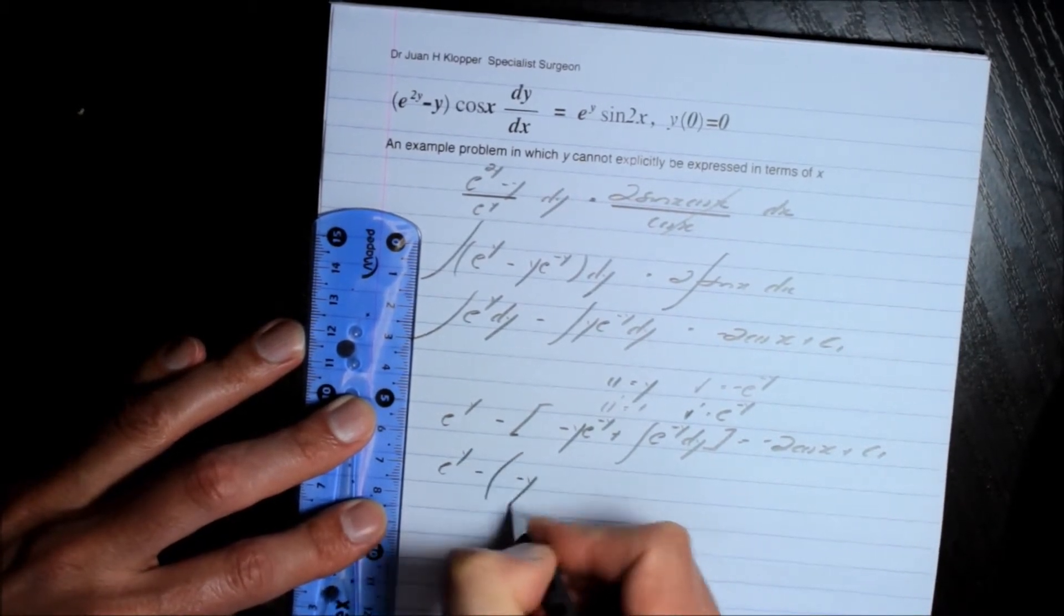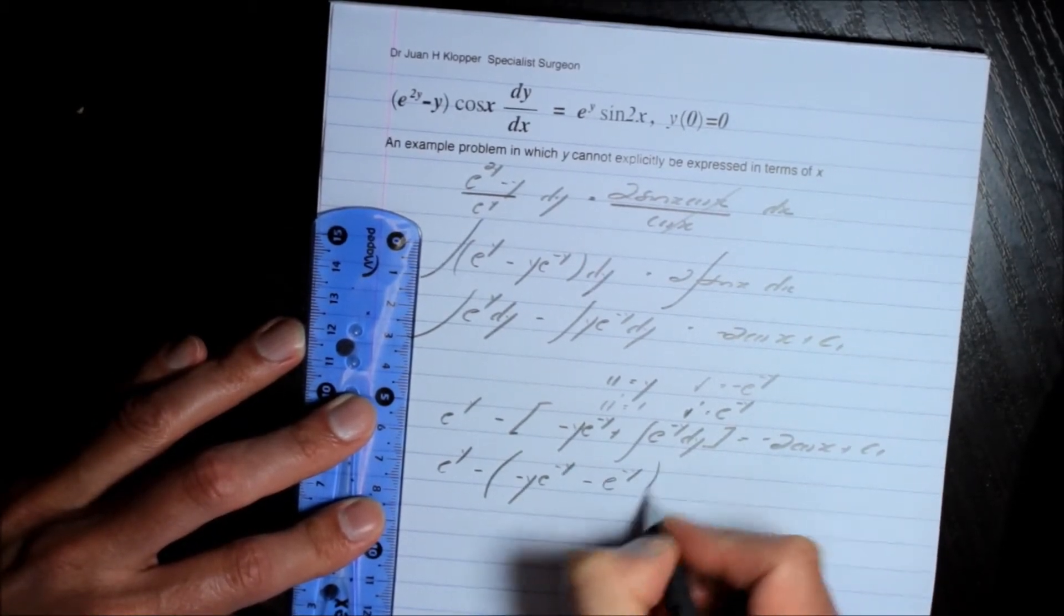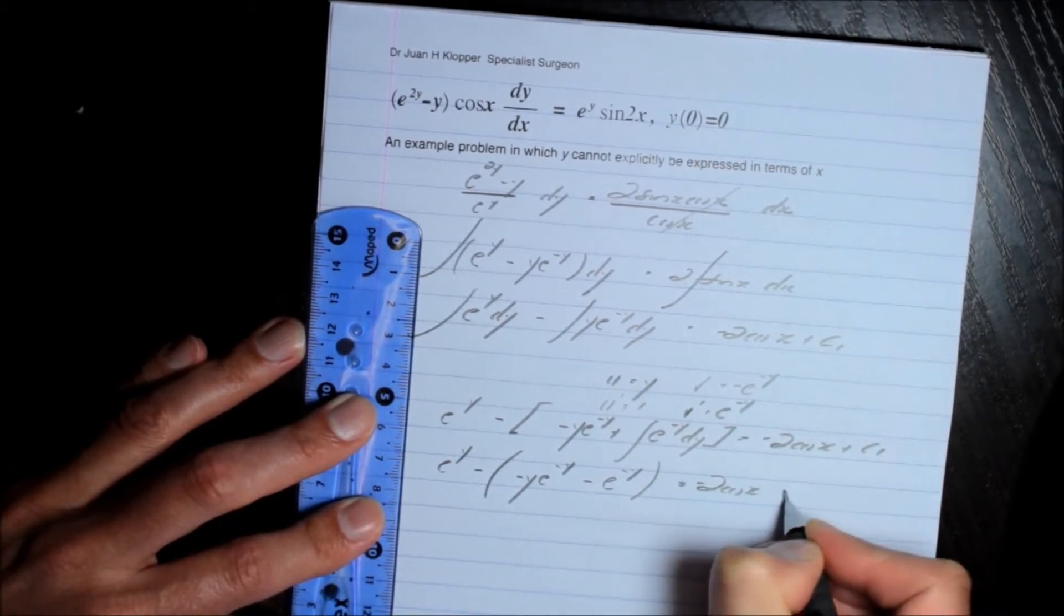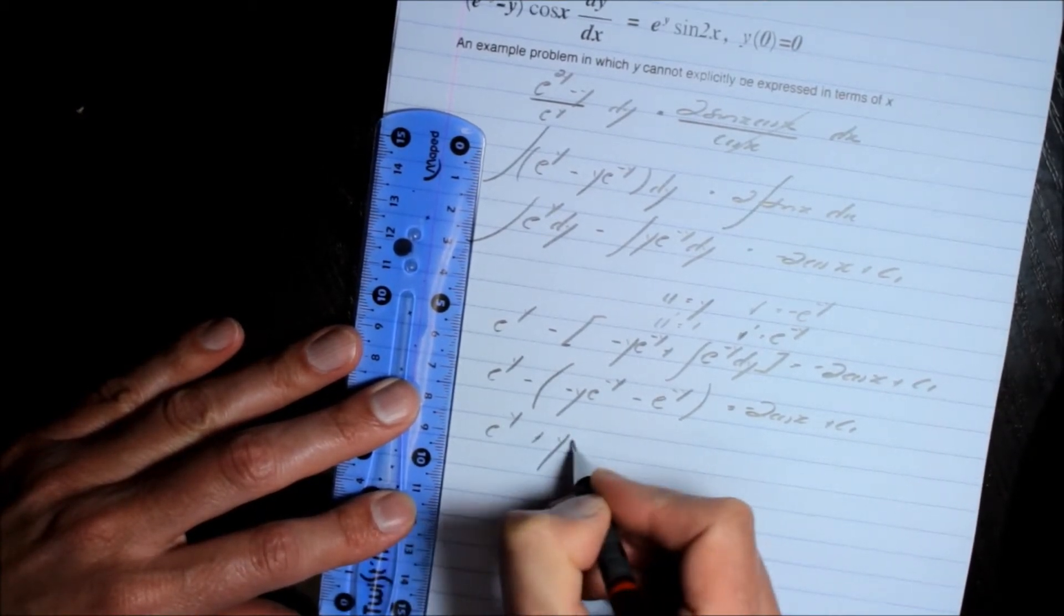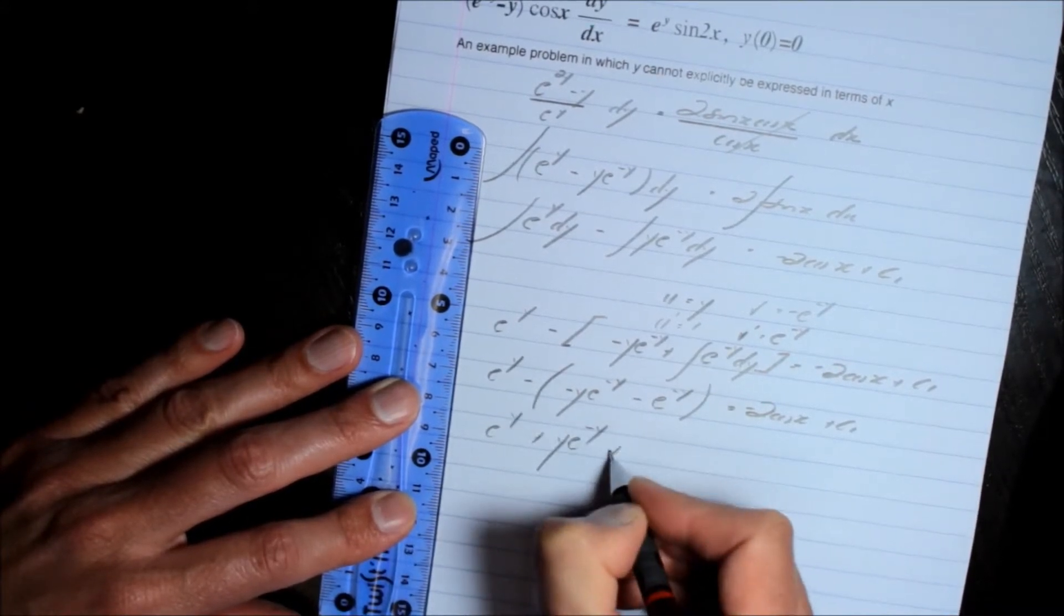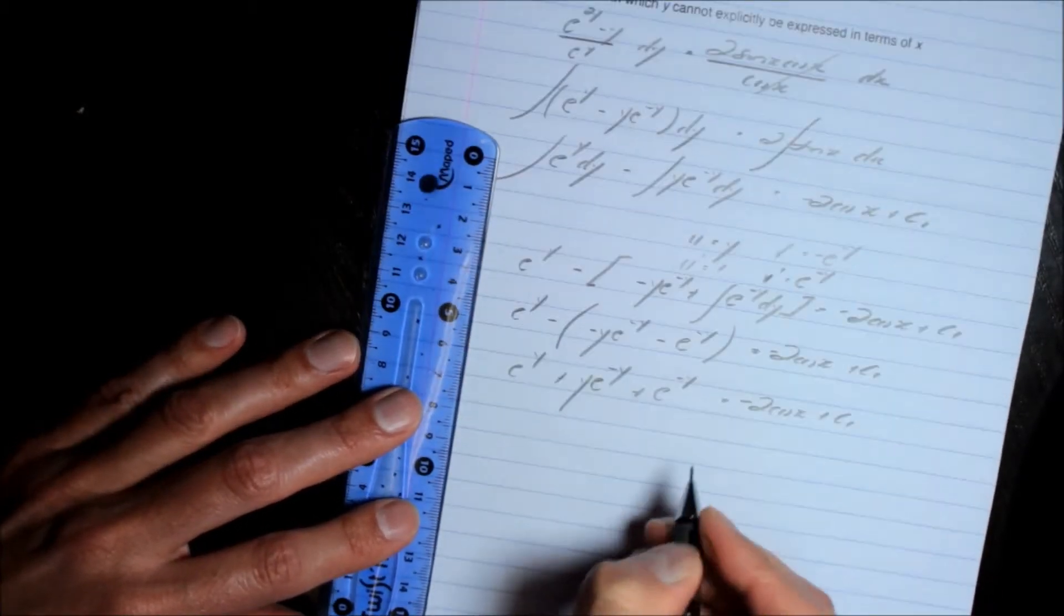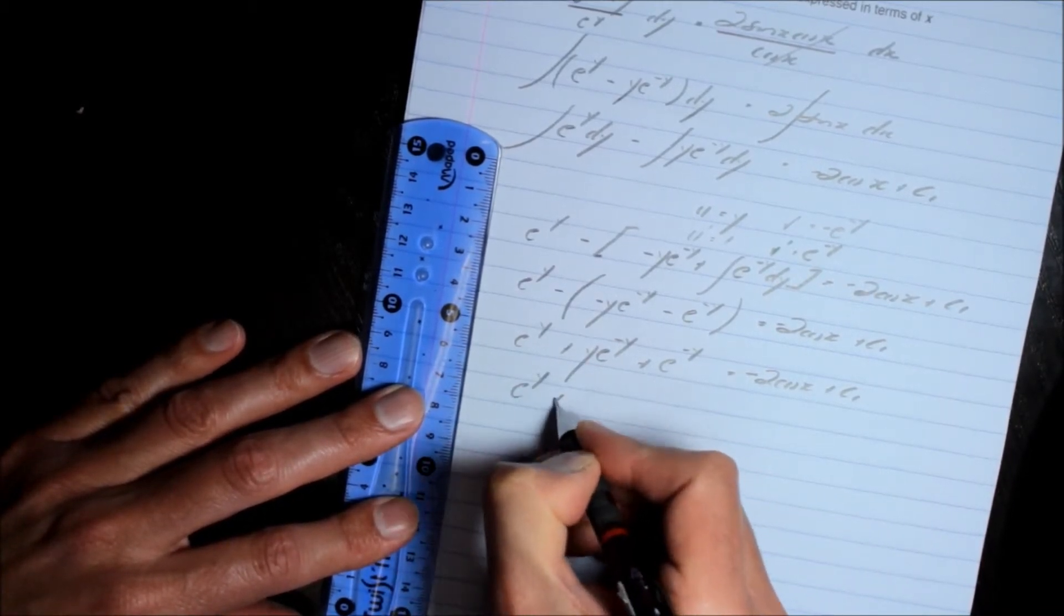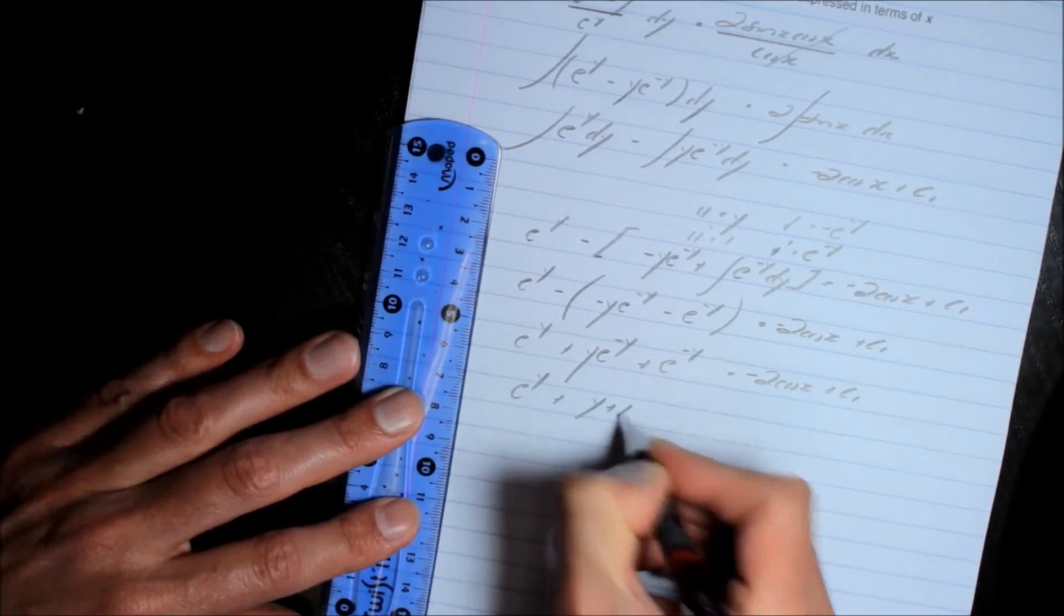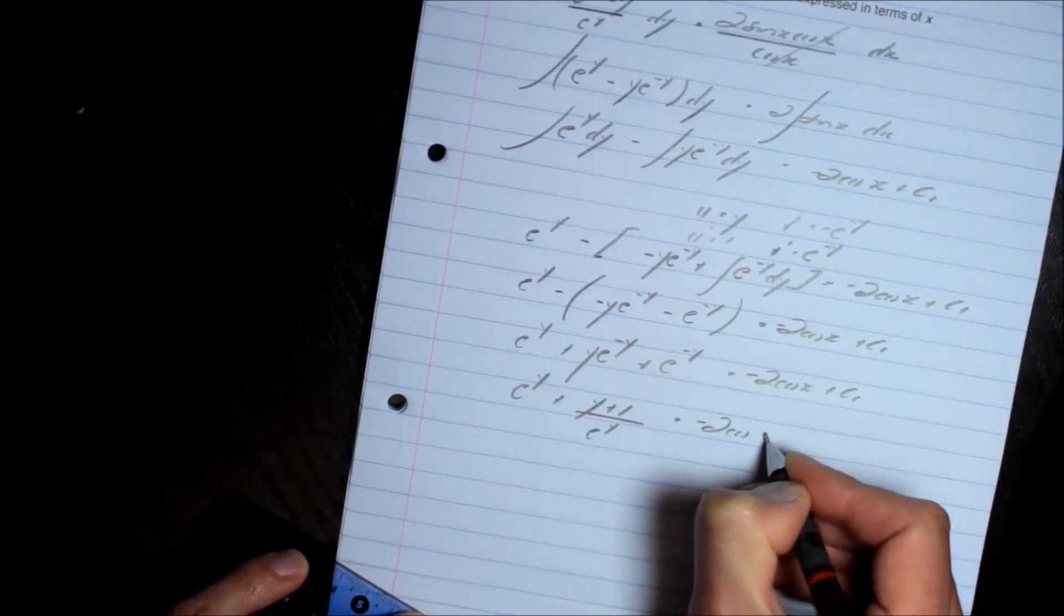So e^y, that's going to be plus y e^(-y) equals -2 times the cosine of x plus c1 still. And I suppose I can go a step or two further. I can say e^y plus, here I'll be left with y plus 1 over e^y equals -2 times the cosine of x plus c1.